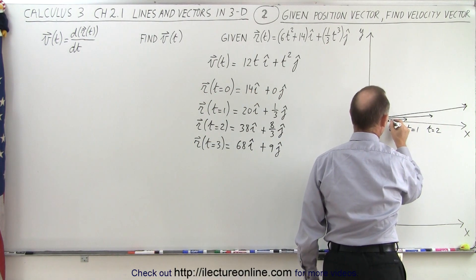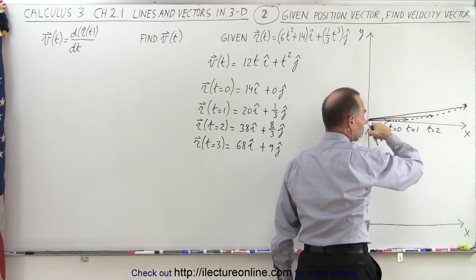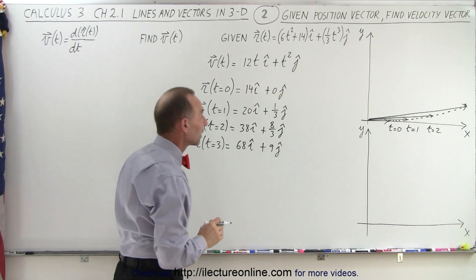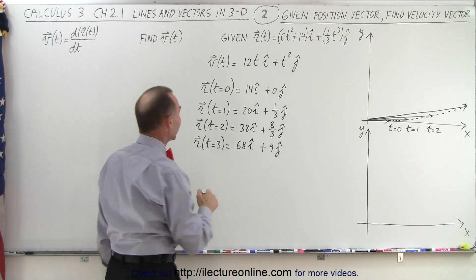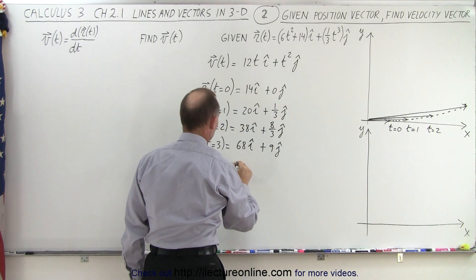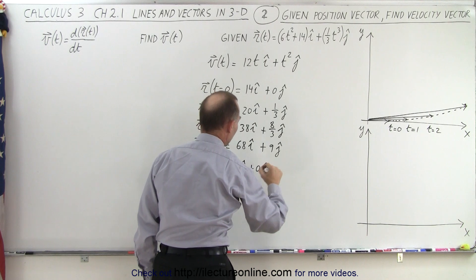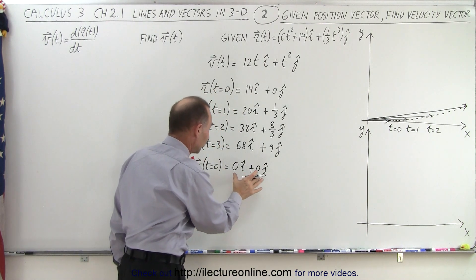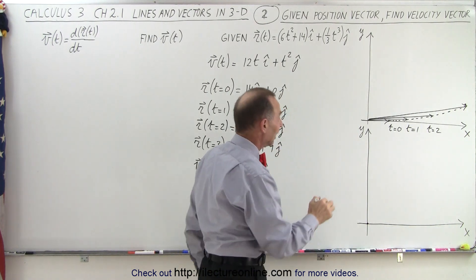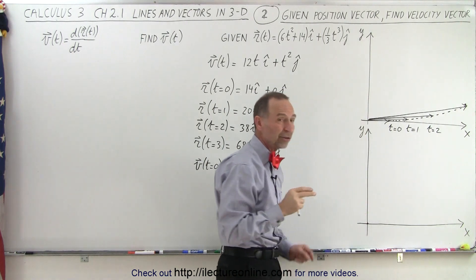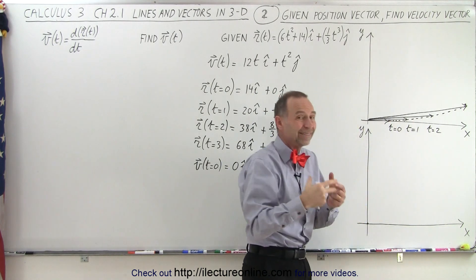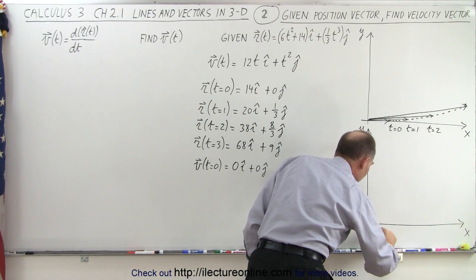At t equals 0, we're over here, and our position in two-dimensional space changes according to the dotted line, giving snapshot positions at various times. Now for the velocity vector at t equals 0: both components become 0, so it's 0i plus 0j — meaning we're stationary with no velocity. We can place the velocity vector anywhere we like, unlike the position vector which always starts at the origin.